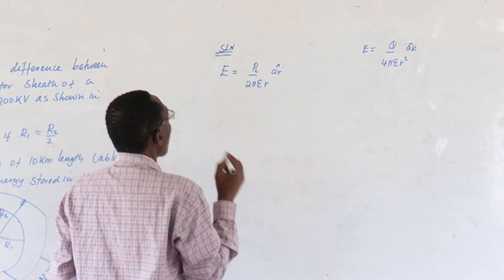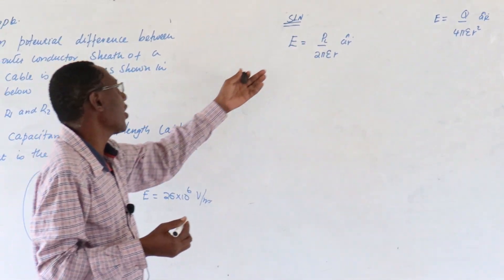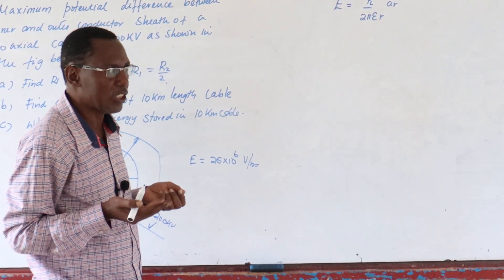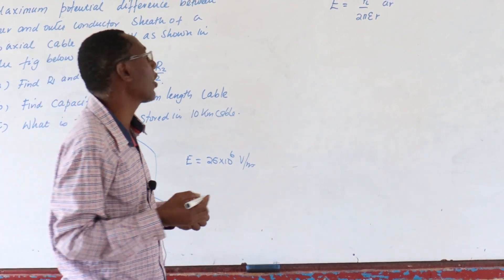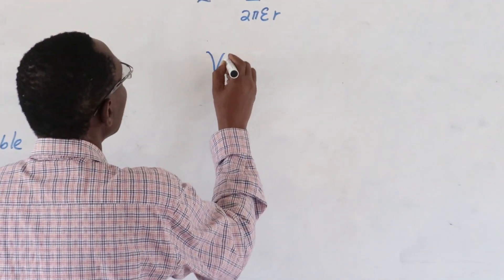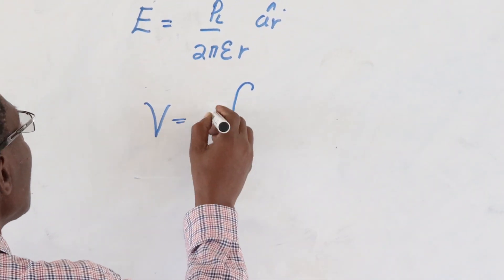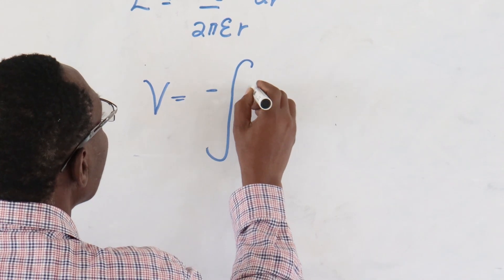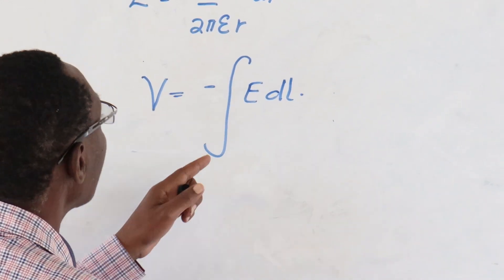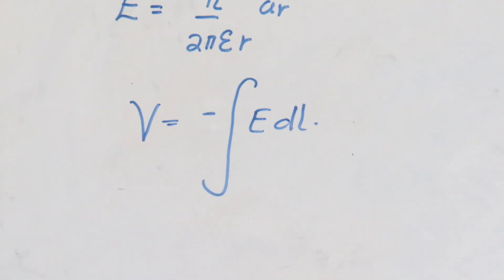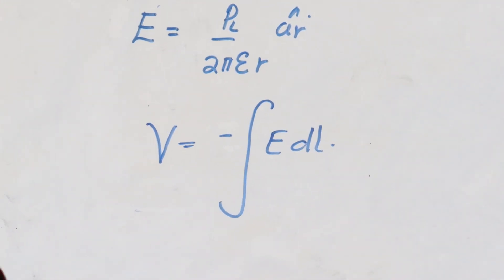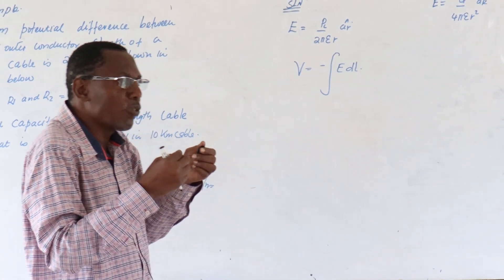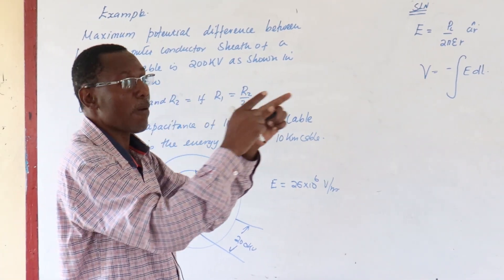What is the formula for getting E? We can get the voltage. The formula for getting voltage is V is equal to the negative integral of E·dL, and the voltage moves from infinity to a point here.